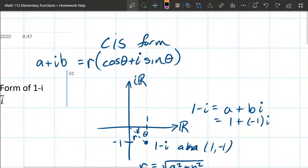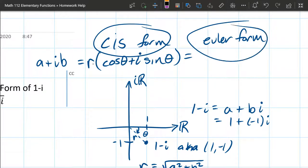So let's talk about Euler form now. Now, one important thing to keep in mind is that cosine i sine and Euler form are both polar forms.